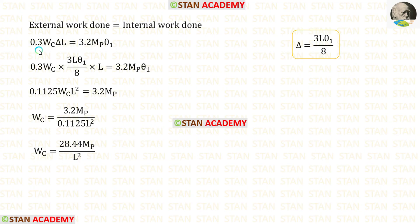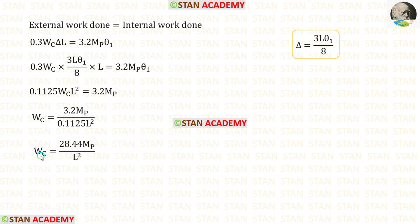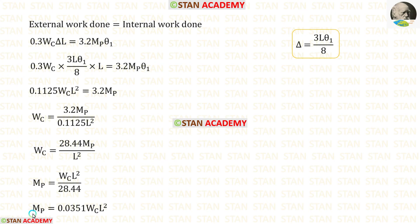Equating external work done to internal work done, and substituting delta = 3L·theta1/8, we get wc = 28.44·Mb/L². We can also express this as Mb = 0.0351·wc·L². Both the static and kinematic methods give the same result. Thank you for watching this video.